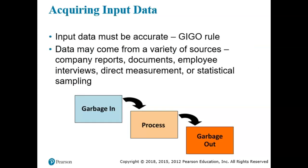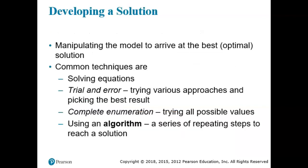Required input data must be available and accurate — see the GIGO rule (Garbage In, Garbage Out). Data may come from a variety of sources: company reports, documents, employee interviews, direct measurement, or statistical sampling.